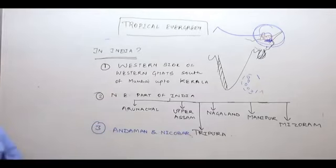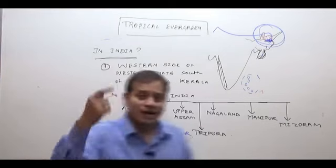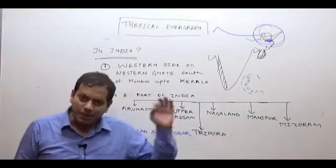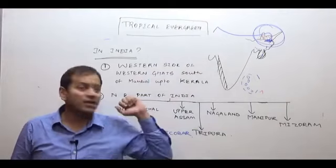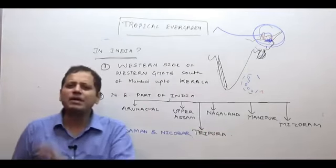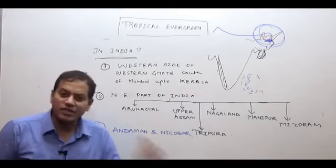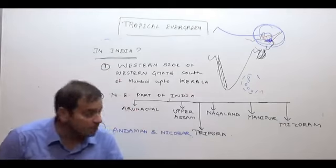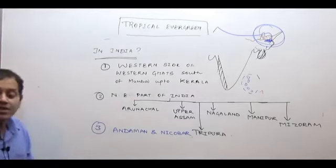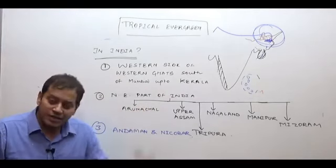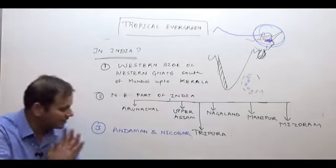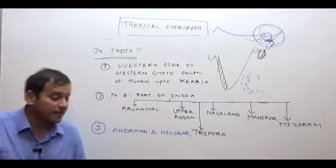So, in India: the western side of the Western Ghats in the southern part includes the state of Kerala; northeast India includes Arunachal Pradesh, upper Assam, and the Purwanchal Hills — Nagaland, Manipur, Mizoram; and the union territory of Andaman and Nicobar. This is the region of very heavy rainfall. As you study this natural vegetation, open the NCERT annual rainfall map to keep these locations clearly in mind.